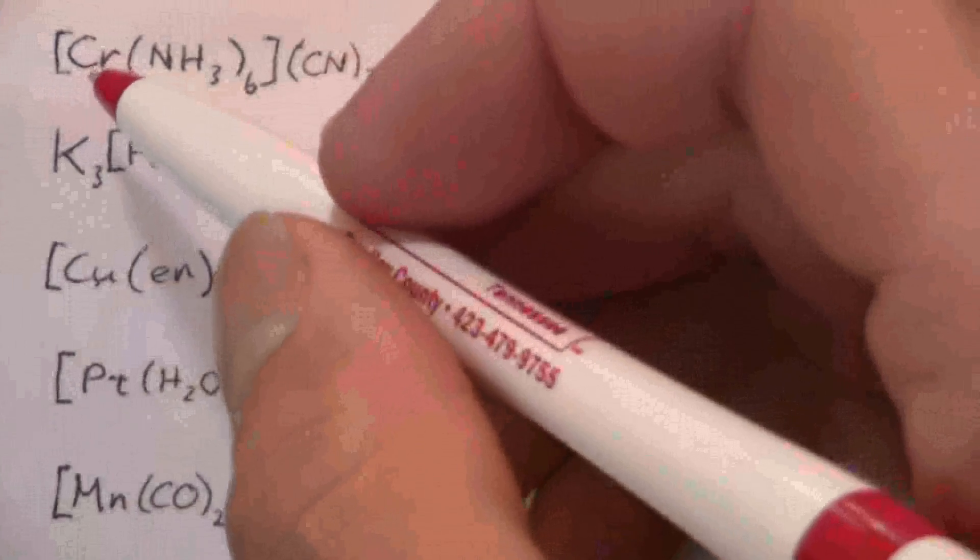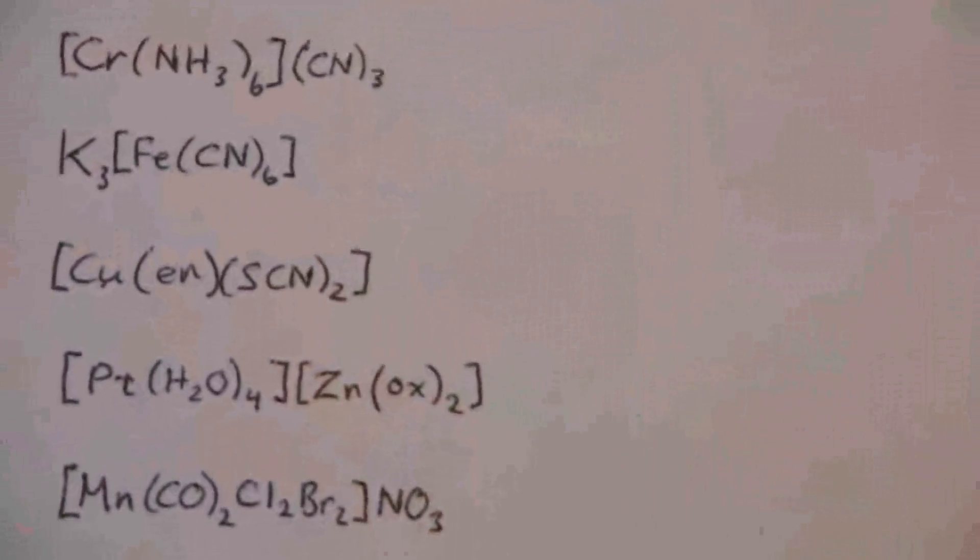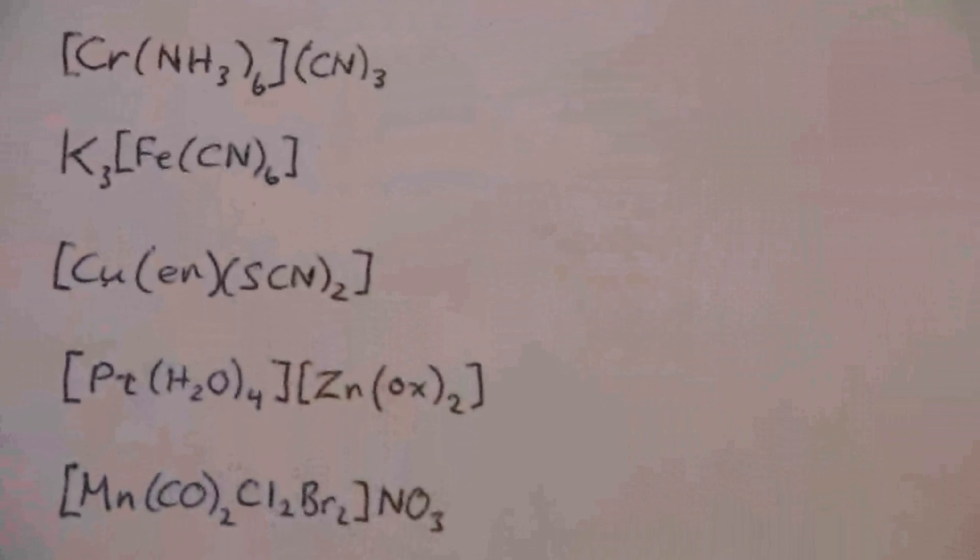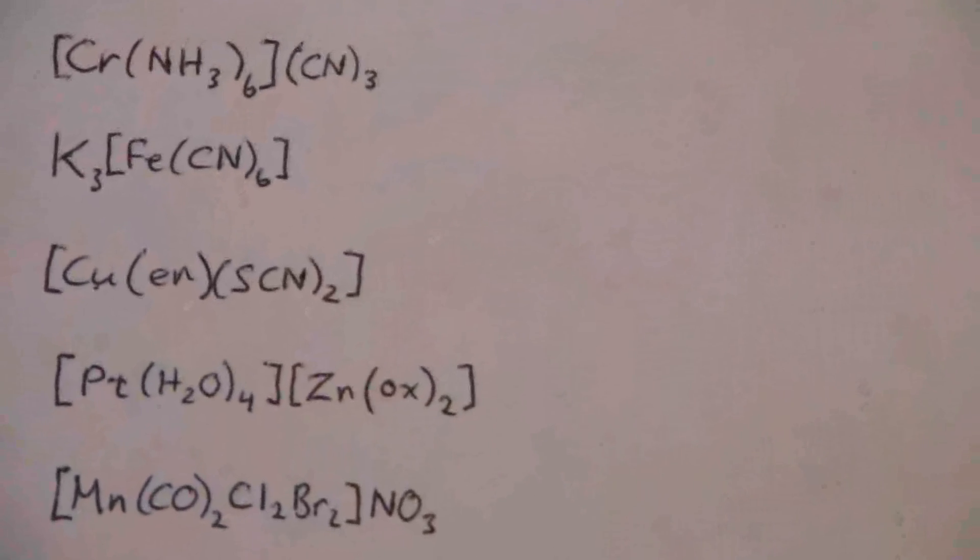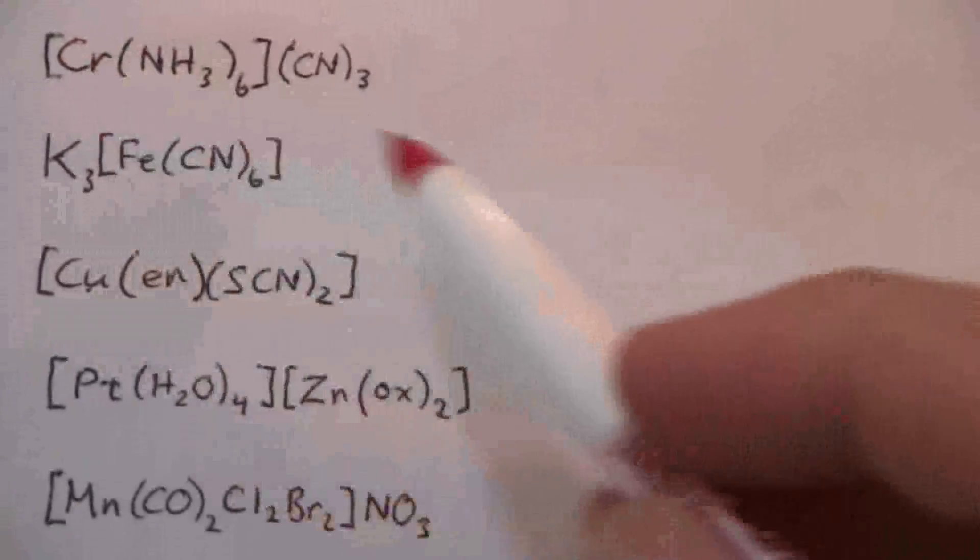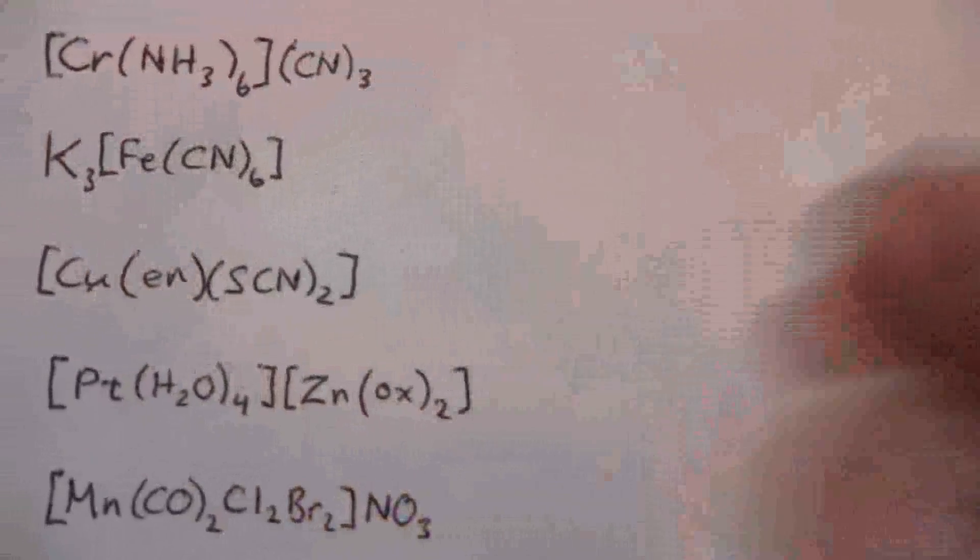All right, so we know we have a chromium 3 compound for the cation. What we need to do is first name the ligand and then the metal for the cation, and then the anion.